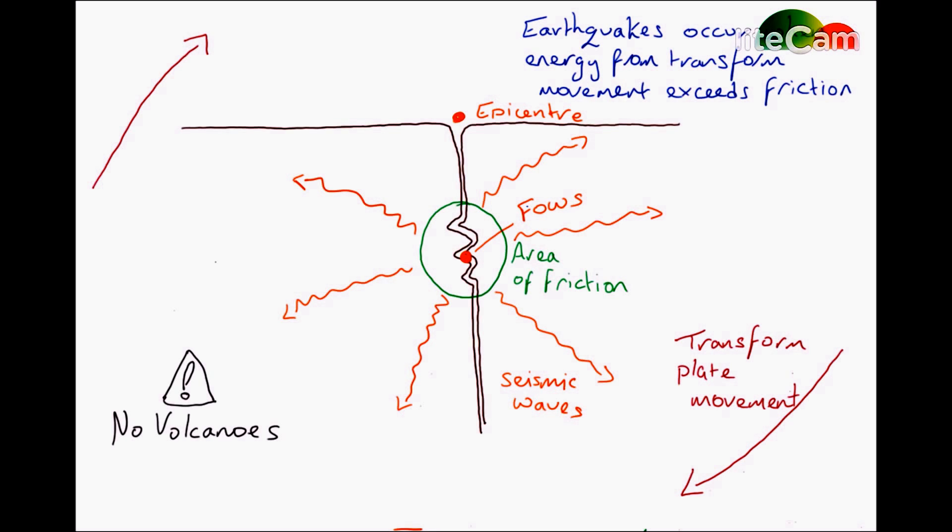Where the focus occurs, that's where you have the seismic waves move away from and they go off in all different directions. As you move away from the focus or the epicenter, the magnitude of the seismic waves decreases with distance.